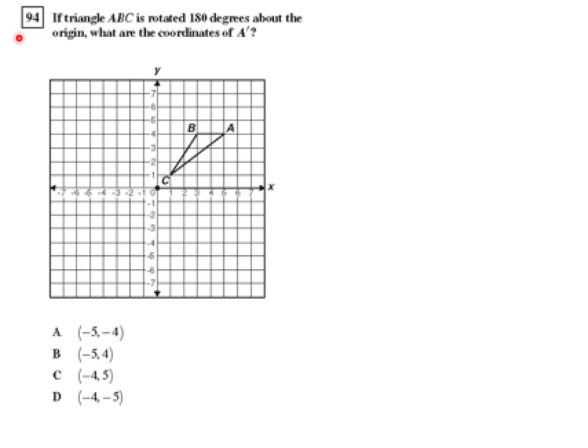Question 94 from the CST Geometry Release Test Questions. If triangle ABC is rotated 180 degrees about the origin, what are the coordinates of A' at the rotated A point?